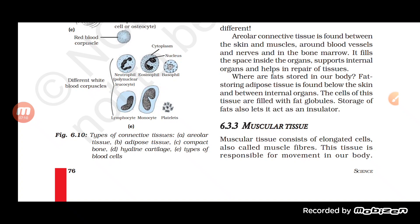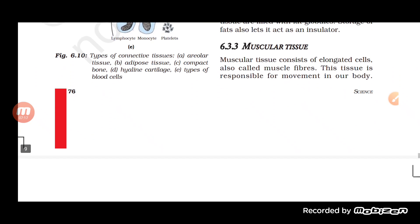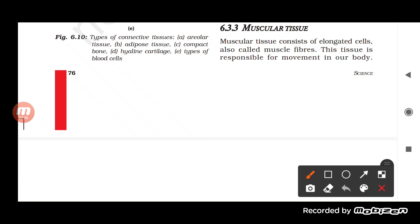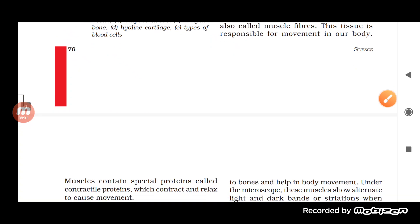Muscular tissue is the next type of animal tissue. Muscular tissue is made up of cells, and these cells are actually called fibers because of their elongated shape. Because of these elongated cells, we call them muscle fibers. Many muscle fibers combine together to form muscular tissue.